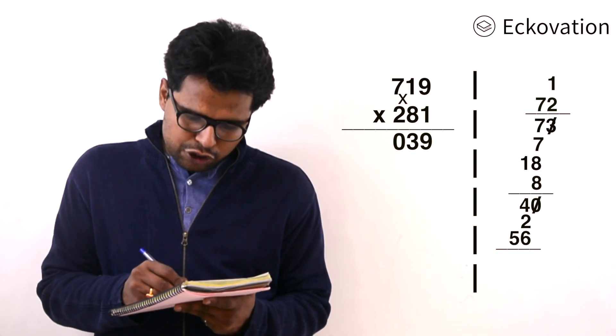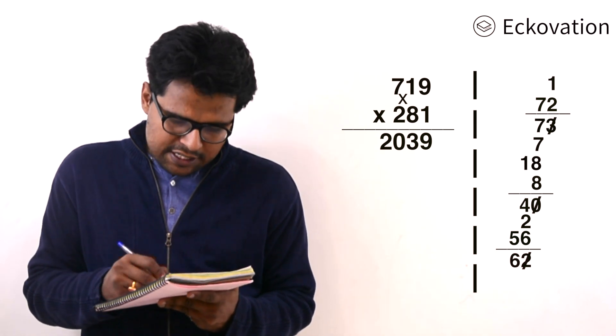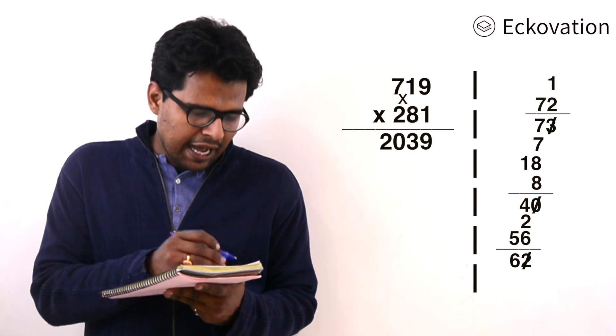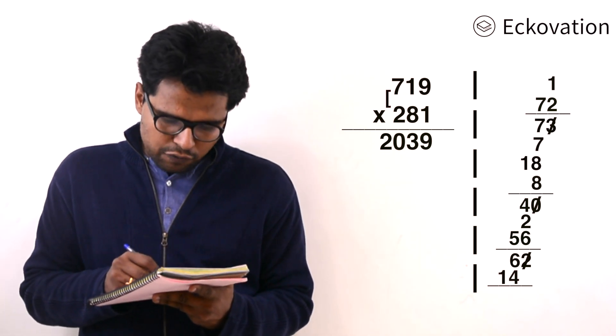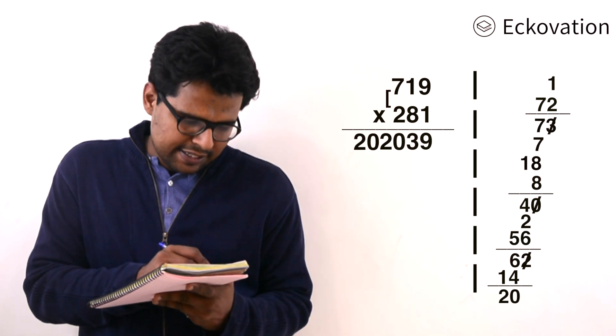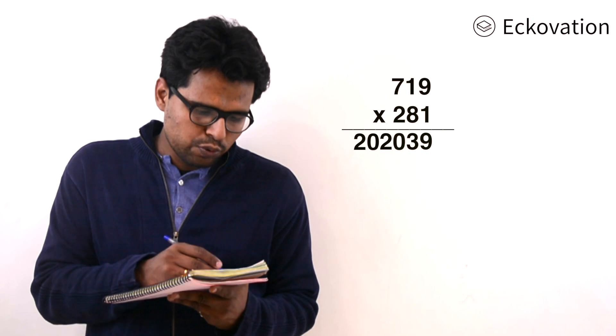Now the last digit: 2 into 7 with the carry gives us 20. We write 20. So the multiplication of 719 and 281 is 202039. This is the answer.